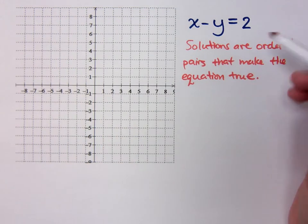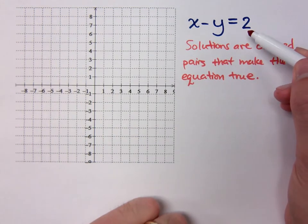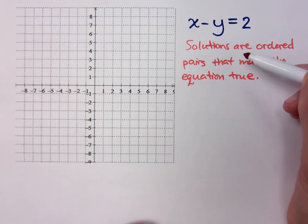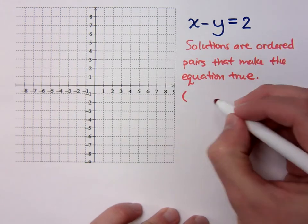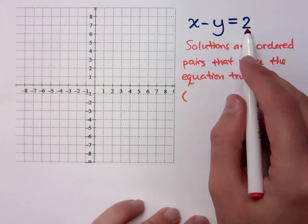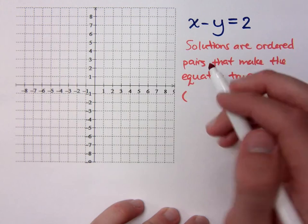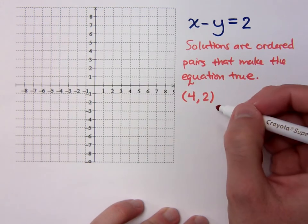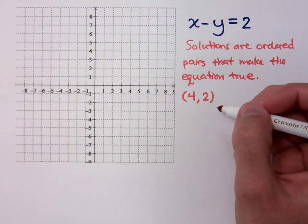Now, we could probably look at this guy and come up with some solutions that would make x minus y equals 2 to be a true statement. Can anybody give me an example? An ordered pair, if I plugged in the x and the y coordinates, I could use 4 and 2, right? Because 4 minus 2 is 2. Is that the only ordered pair that works? No. What else?